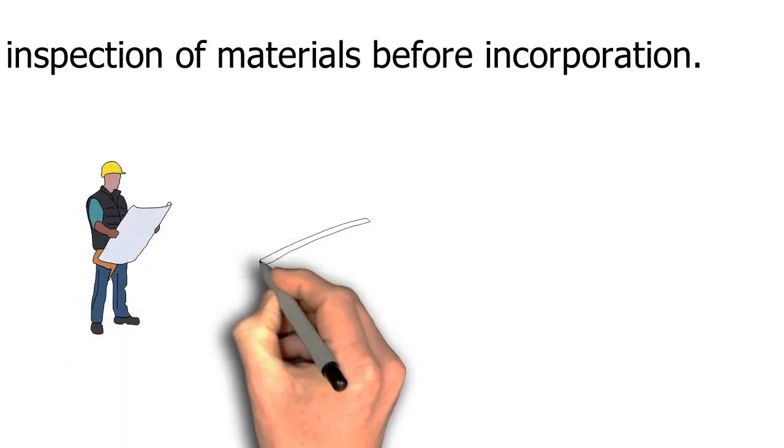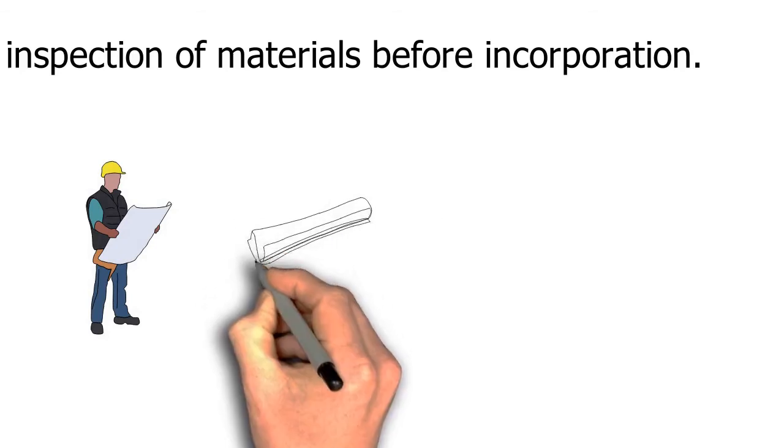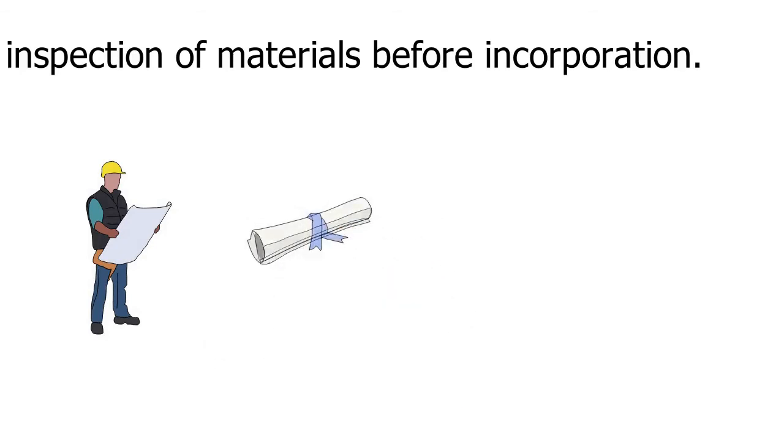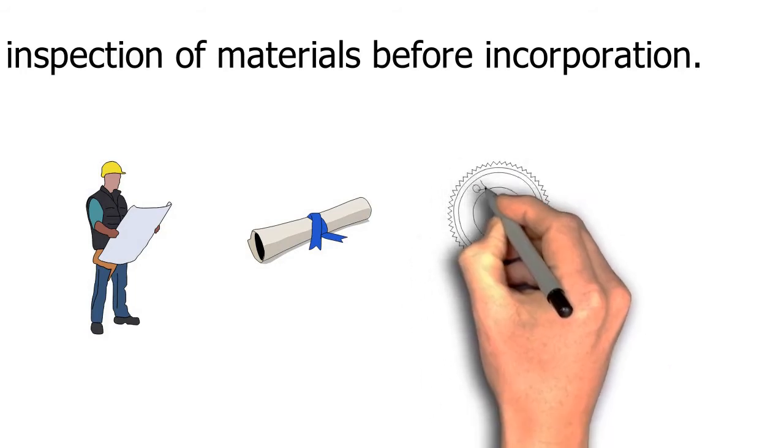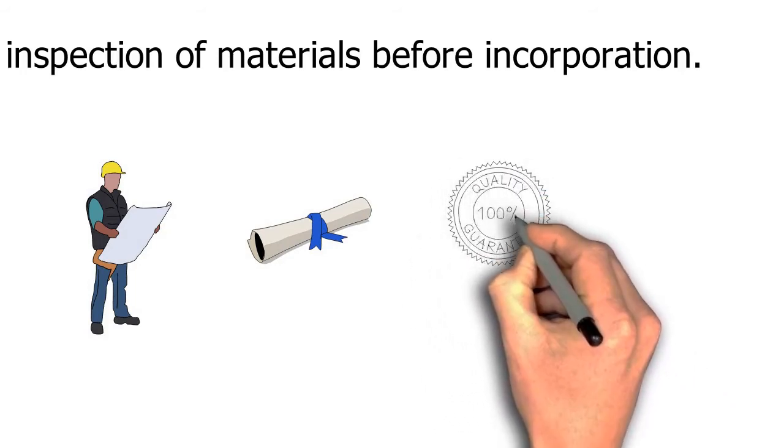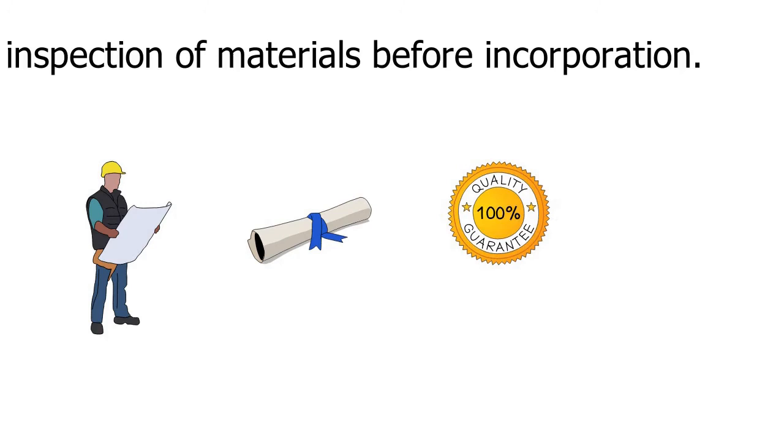The engineer has the authority to remove and replace unacceptable material or work and to deduct from money due to the contractor the cost of removal and replacement.